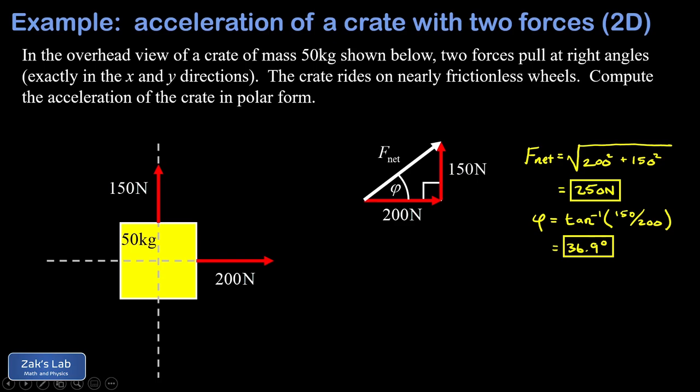So that's our net force written in polar form, but we were really asked for the acceleration of this crate in polar form. So the first point I want to make is that the acceleration happens in exactly the same direction as the net force. So we already have the angle for the acceleration vector, but we need to use Newton's second law to find the magnitude of the acceleration.